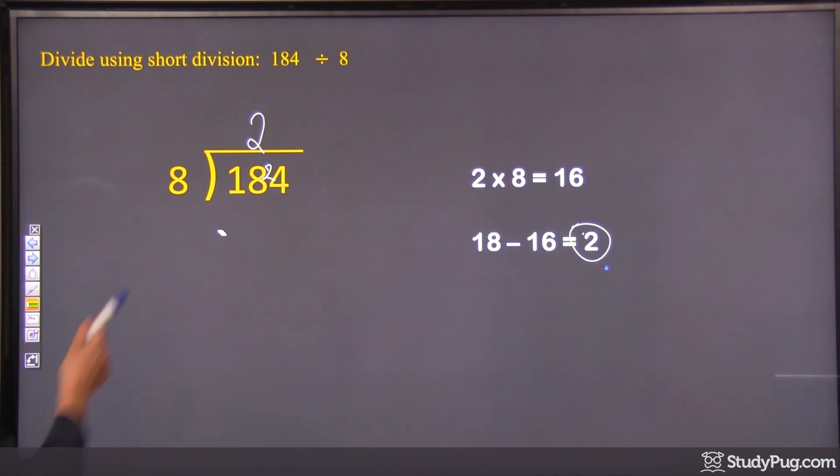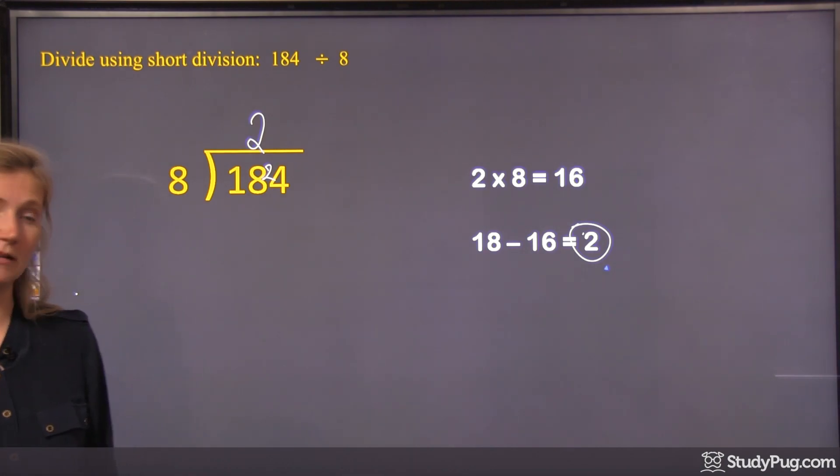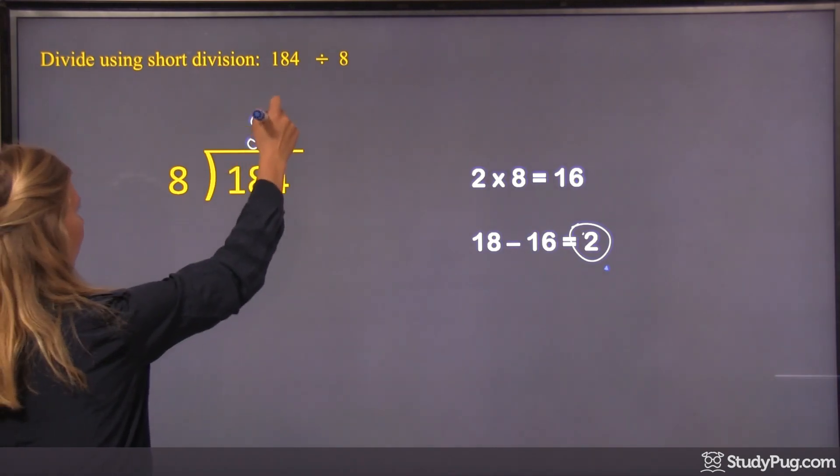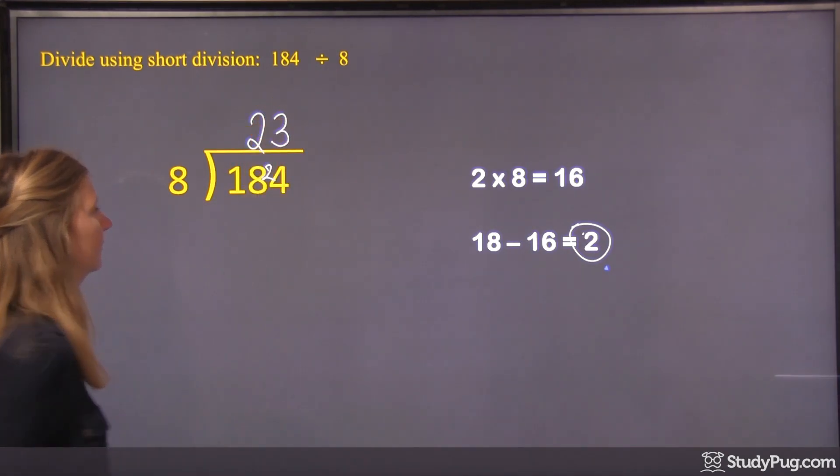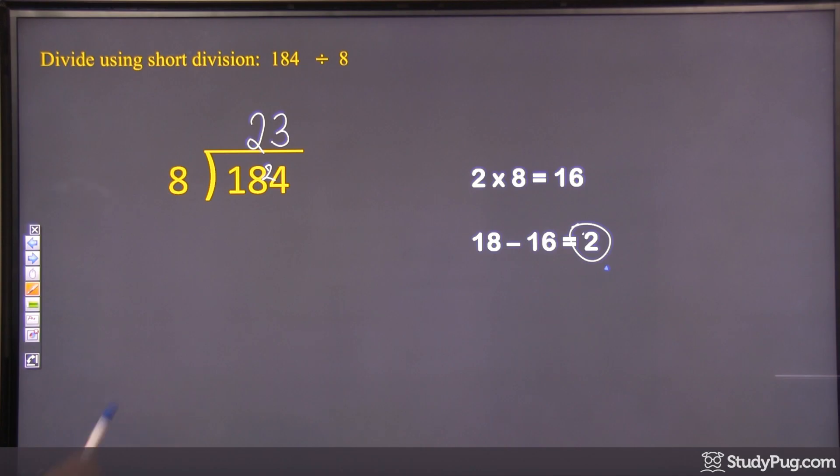So our next step of division, of course, is 24 divided by 8. And that one goes evenly, right? 3 times 8 is 24. Or 24 divided by 8 is 3. Okay? So our quotient would be 23 there.